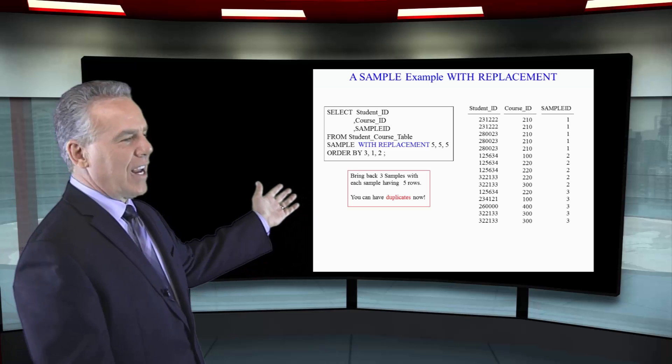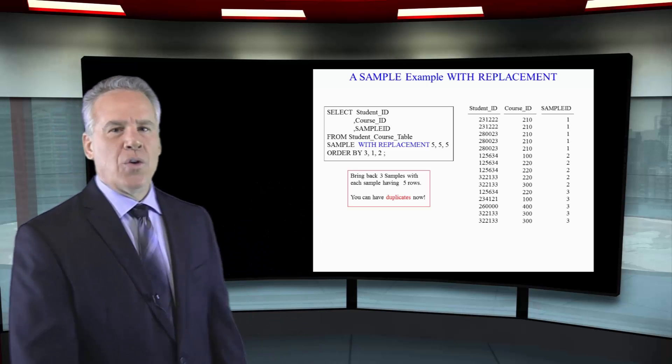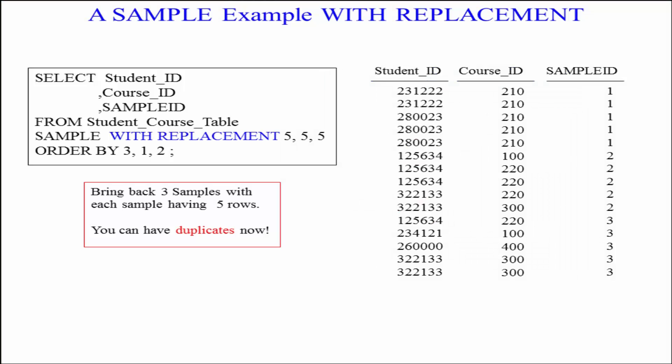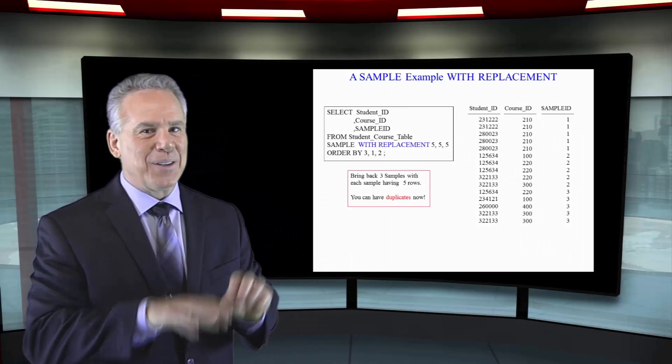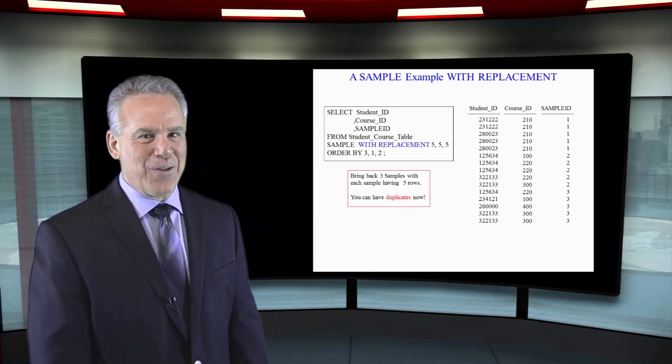We can use the SAMPLE WITH REPLACEMENT command and this will allow duplicates. So now when we say I want to get the student ID, the course ID, sample ID from the student course table — SAMPLE 5, 5, 5 — they're going to give us 15 rows coming back because they know they can have some duplicate rows in there.